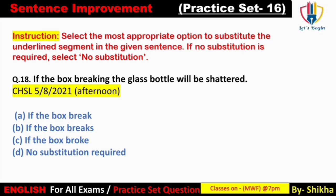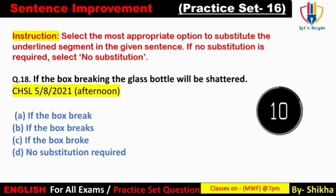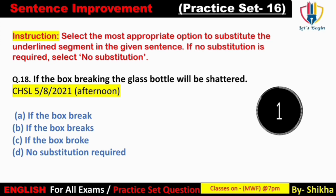Next: 'If the box breaking, the glass bottle will be shattered.' Yeh sentence first conditional ke upar banna chahiye — baadwala simple future form mein diya gaya hai. Sentence mein '-ing' form diya gaya hai — yeh galat hai, continuous form mein nahi banta. Option A 'if the box break' — 'box' third person singular hai, 'breaks' aayega na ki 'break.' Option C 'if the box broke' — past form, galat. Answer: option B — 'If the box breaks, the glass bottle will be shattered.'